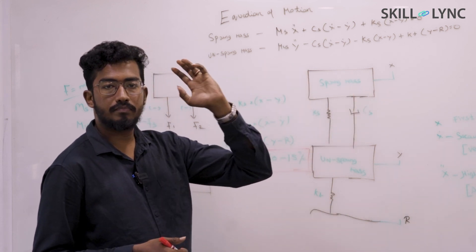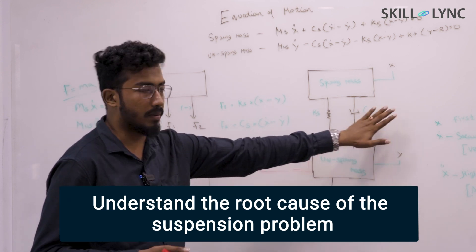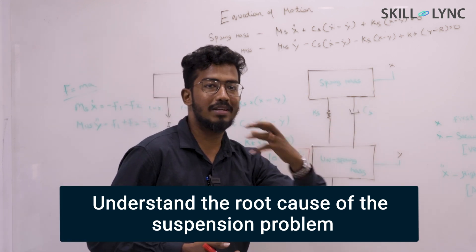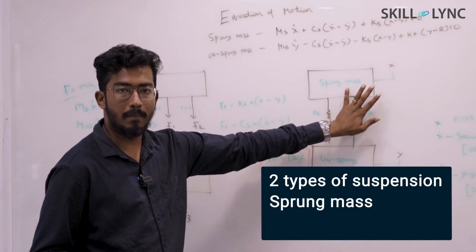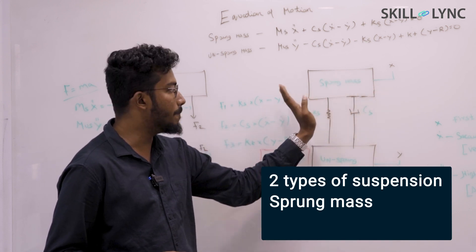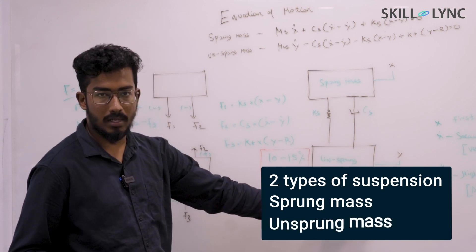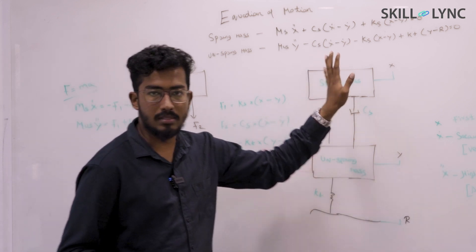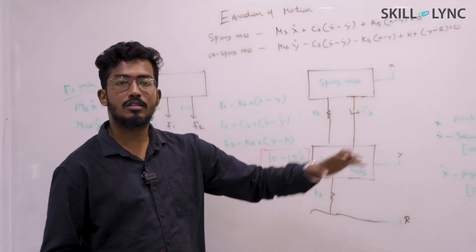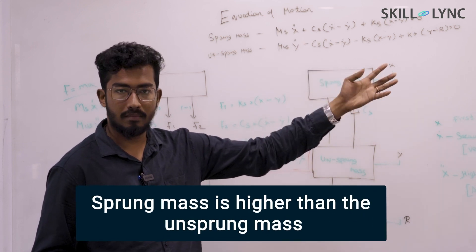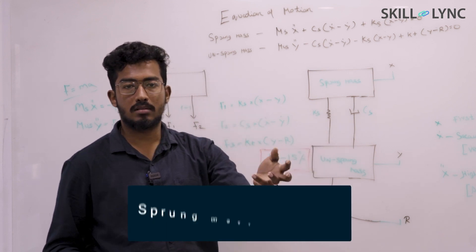Basically, we classify suspension into two types: one is sprung mass, the mass which is borne by the springs of your suspension, and another is unsprung mass. Typically, the mass borne by the spring has to be comparatively higher. Think about what masses come under sprung mass.